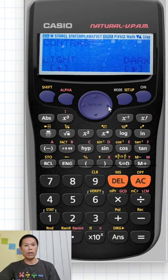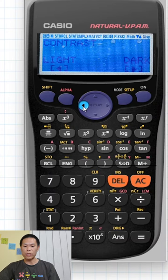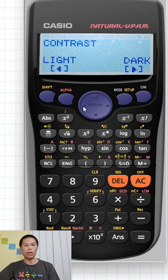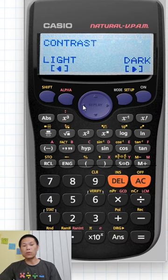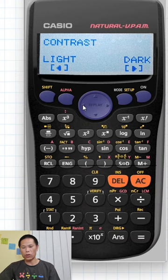If I want the brightness of your screen, you press this button here. There you go, this is how you increase or decrease the darkness of your calculator. Thank you so much for watching.